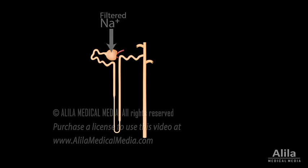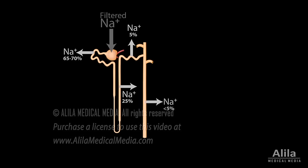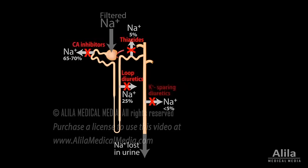Sodium and water are filtered in the glomerular capsule of nephrons, then reabsorbed back to the blood at various sites along the renal tubule. Different classes of diuretics prevent sodium reabsorption and thus increase sodium loss, at different sites, by different mechanisms.